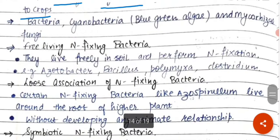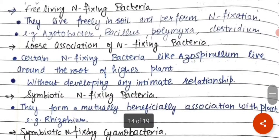Pehli category: free-living nitrogen fixing bacterias. They live freely in the soil and woh nitrogen fixation karte hain. Nitrogen jo hai, woh normally condition mein plant use nahi kar sakta jis form mein atmosphere mein present hota hai — toh nitrates aur nitrites ki form mein hi plant consume kar sakta hai. Iske liye we have nitrogen fixing bacterias like Azotobacter, Bacillus, Clostridium, and Polymyxa.